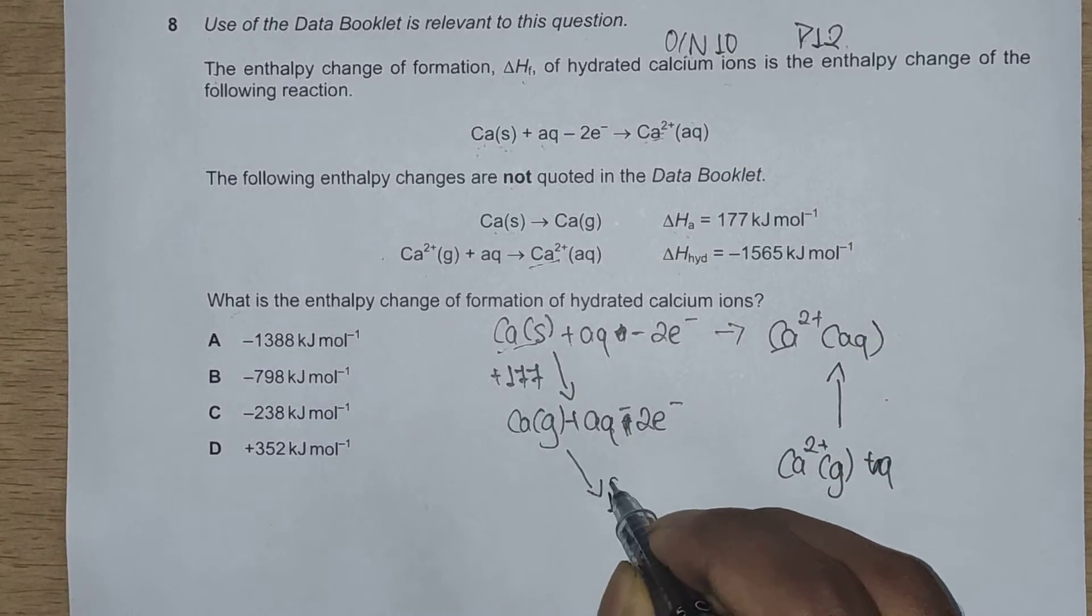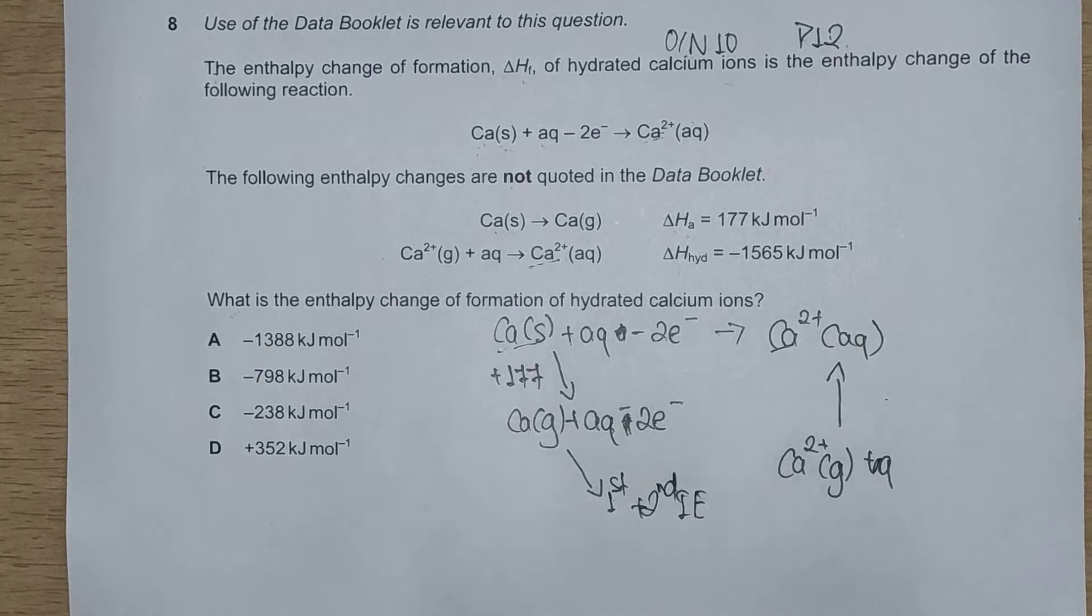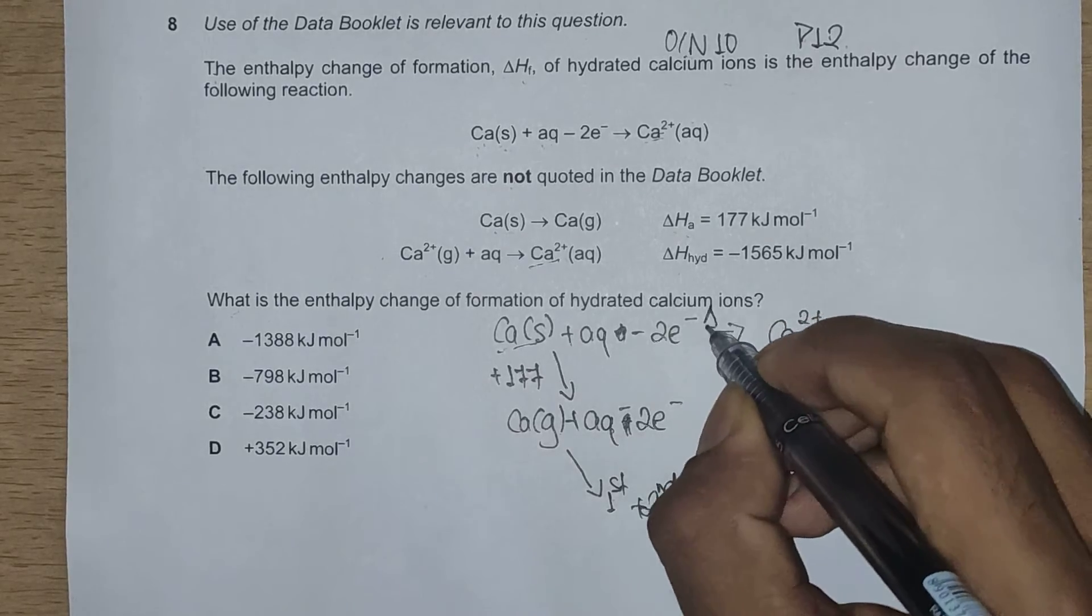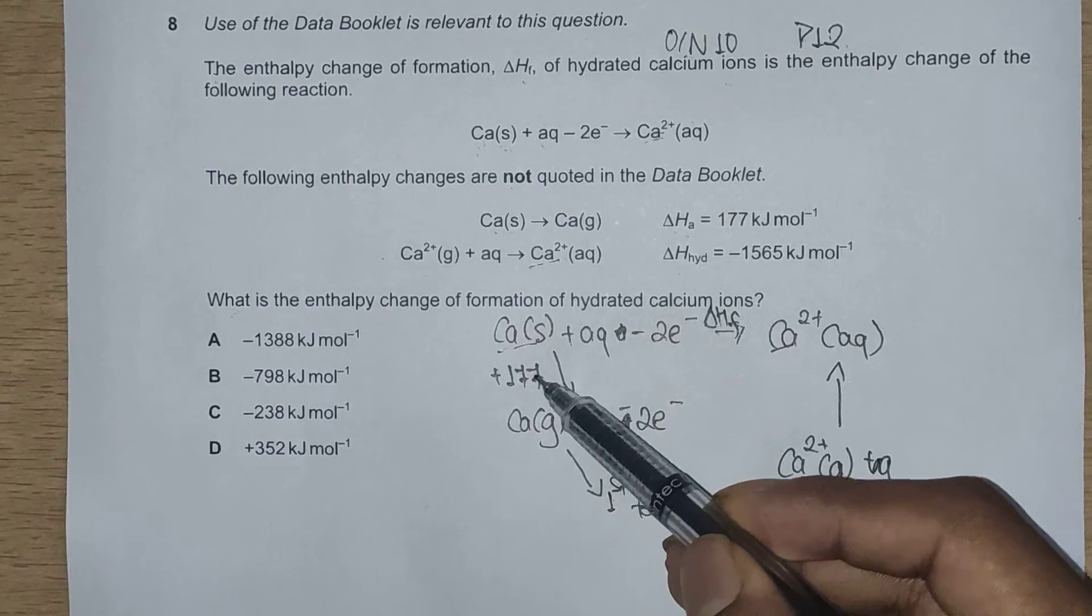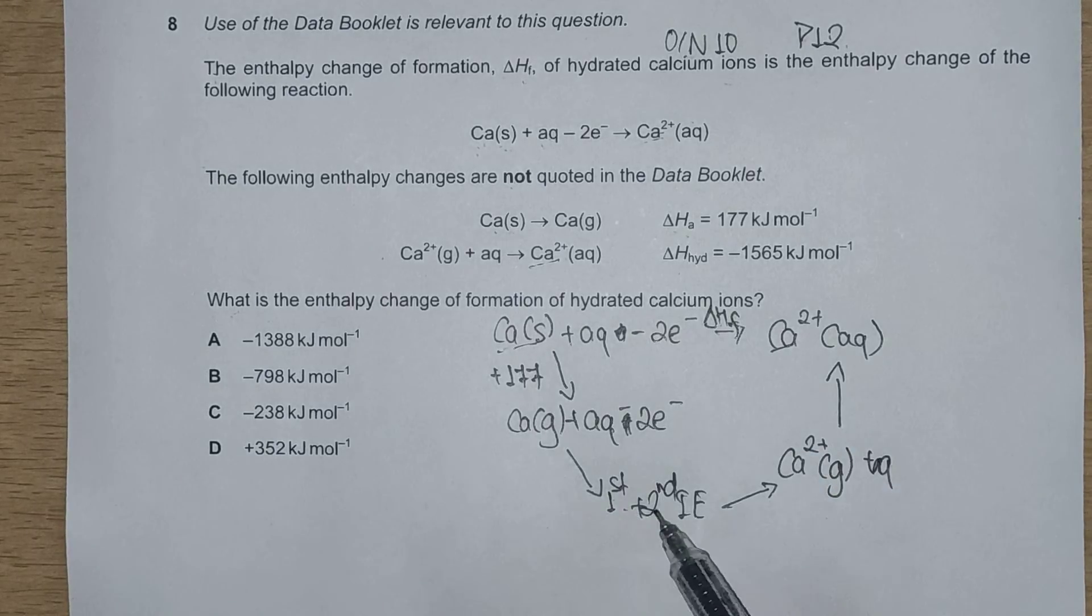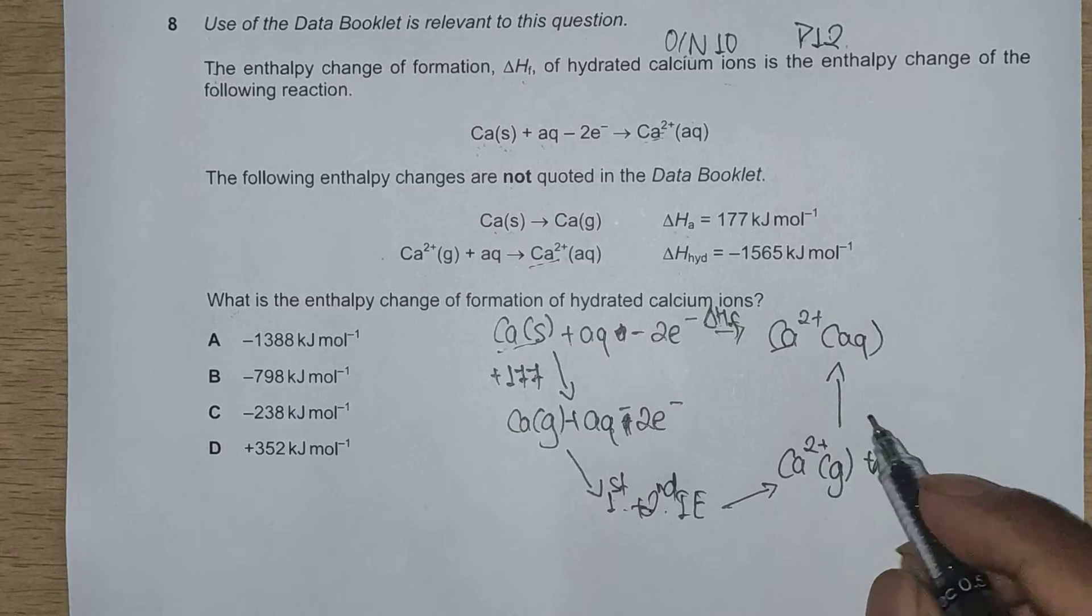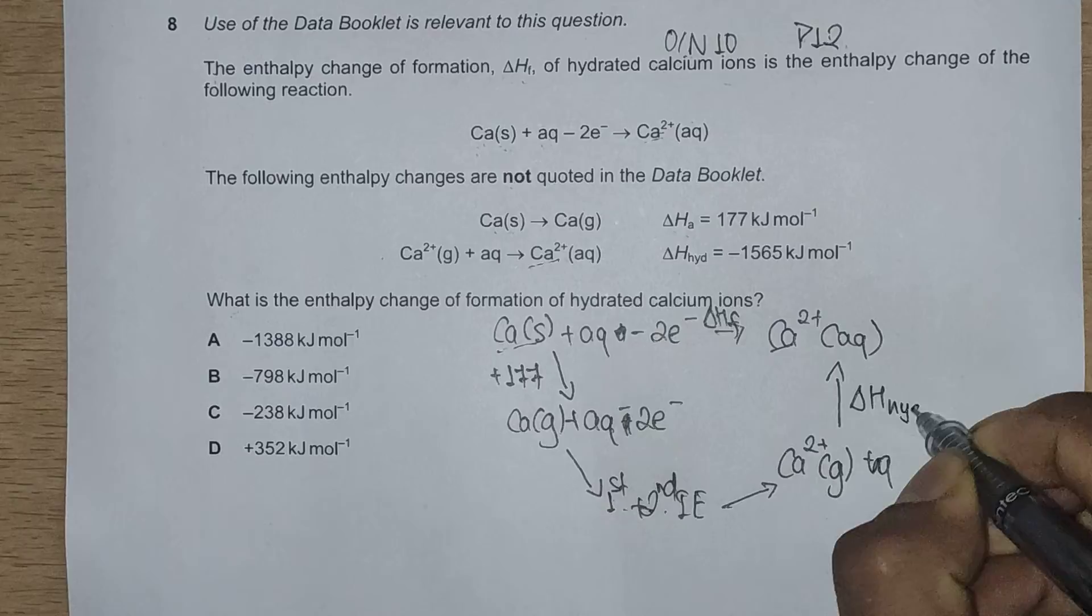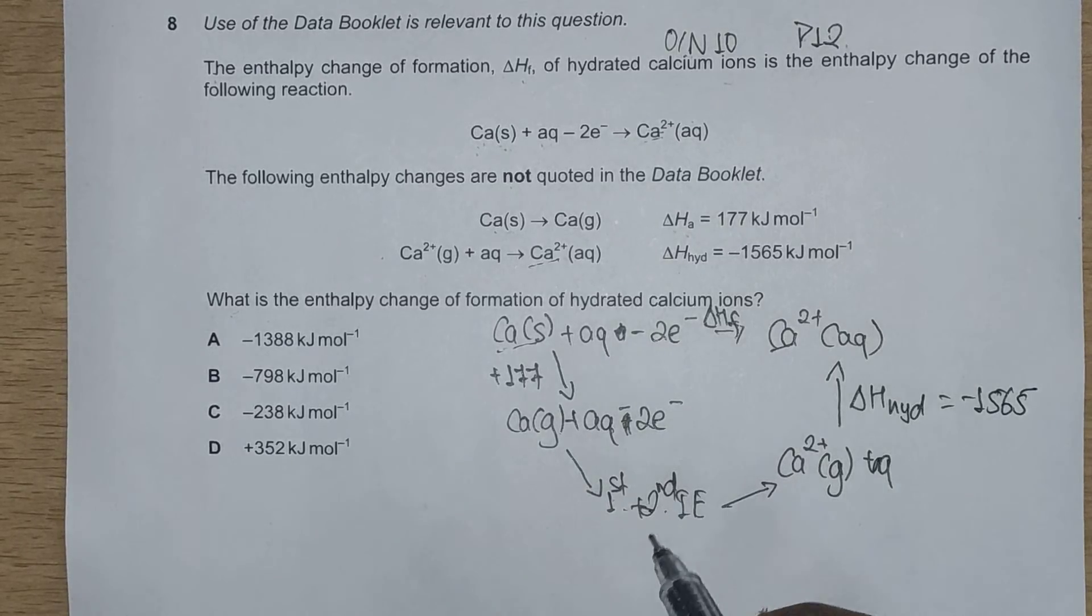Because also we're given that use of the Data Booklet is relevant to this question. So the bridge between this is first and second ionization energy of calcium, and we'll connect these arrows. So this is delta H_f, this is enthalpy change of atomization, this is first and second ionization energy of calcium, and this is enthalpy of hydration of calcium, delta H_hyd.